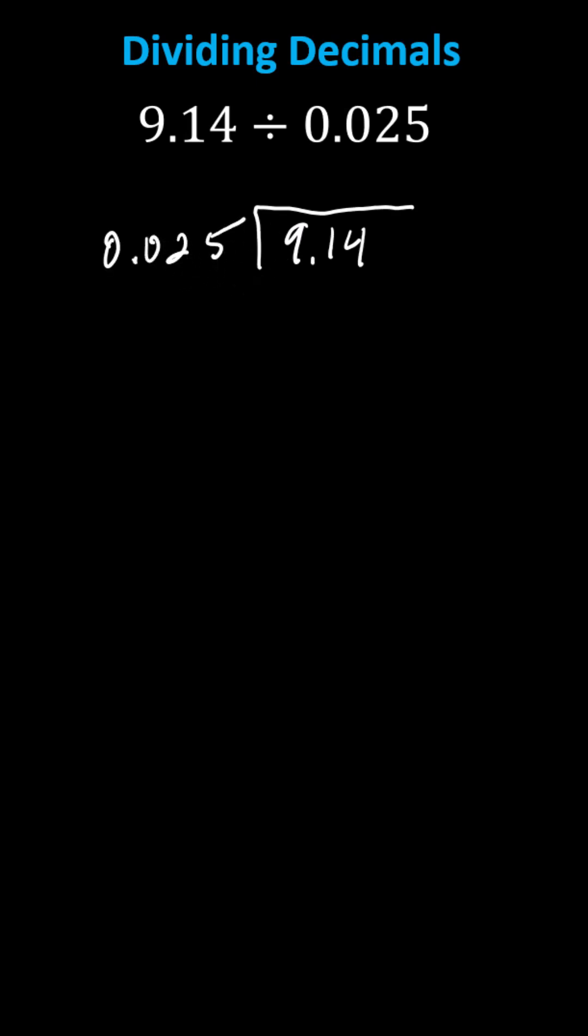When dividing decimals, we need the divisor to be a whole number, not a decimal. Notice to make 25 thousandths a whole number, we need to move the decimal point one, two, three places to the right, which is equivalent to multiplying by 1,000.